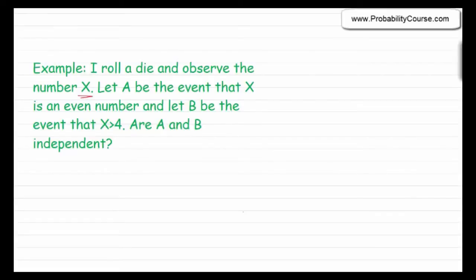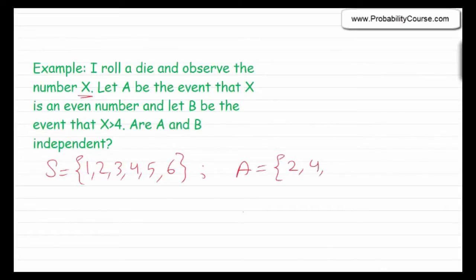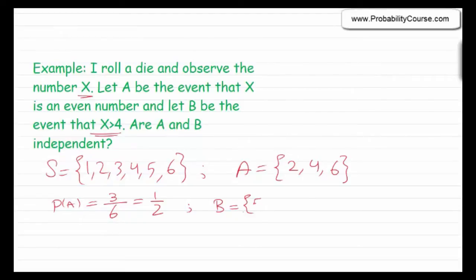Let's solve this. Our sample space is {1, 2, 3, 4, 5, 6}. Event A — the outcome is an even number — is {2, 4, 6}. The probability of A is 3 over 6, which equals 1/2, since all outcomes are equally likely. Event B — X is larger than 4 — is {5, 6}. There are two elements in B, so the probability of B is 2 over 6, which equals 1/3.